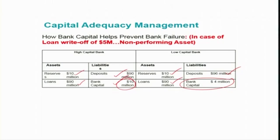In the case of non-performing assets, banks have to write off loans after a certain period. Suppose both banks have 5 million dollars of bad loans — non-performing assets — that they have to write off. Let us see how their capital helps them in preventing bank failure.